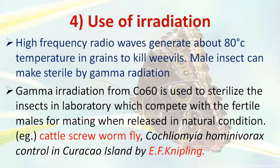The fourth practice is the use of irradiation. Gamma irradiation is used here. High frequency radio waves can generate about 80 degrees Celsius temperature in grains to kill stored grain pests. Male insects can also be made sterile using gamma radiation — specifically, cobalt-60 is used to sterilize insects in the laboratory. When these sterile males are released in natural conditions, they compete with fertile males for mating, resulting in no further generation.